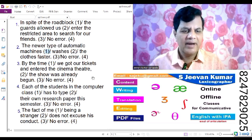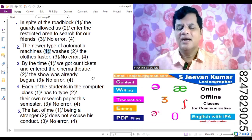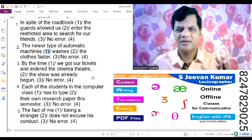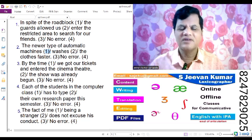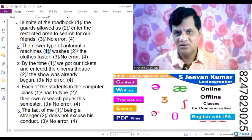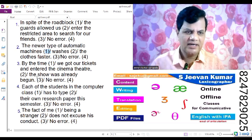Third sentence: By the time we got our tickets and entered the cinema theater, the show was already begun. So here there is a syntactical error in the third part. The show was already is simple past, but the correct form should be the show had already begun. So this is number three.